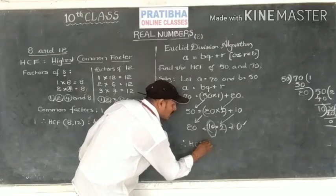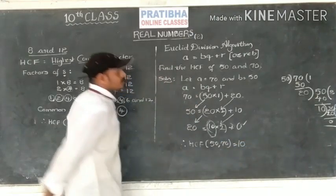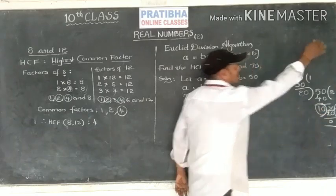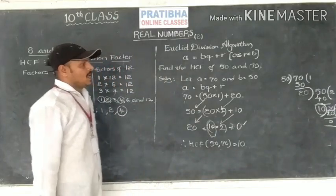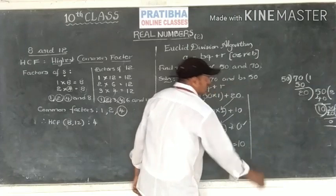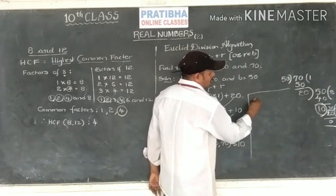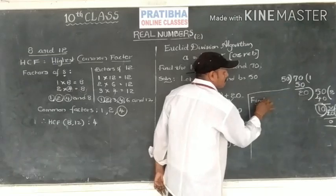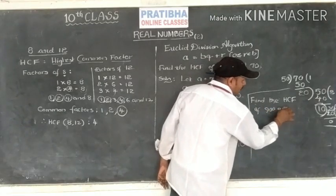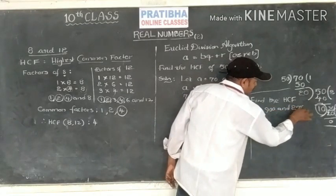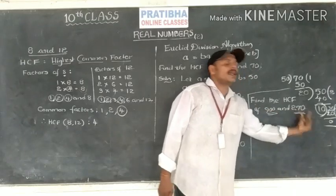Therefore, the HCF of 50 and 70 is equal to 10. Now I will give you two numbers — just try to find the HCF. Find the HCF of 900 and 270 using the Euclid division algorithm.